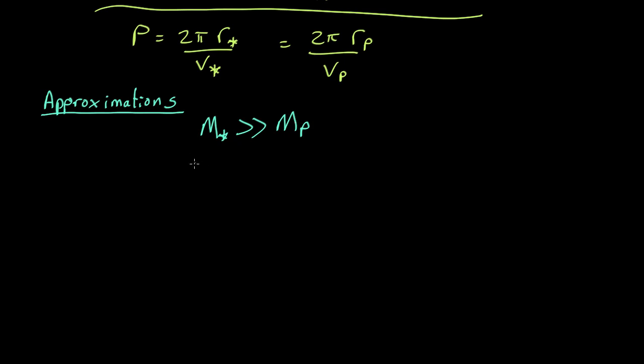What that means is that the sum of the mass of the star plus the mass of the planet is approximately equal to just the mass of the star. Adding the planet on makes almost no difference.